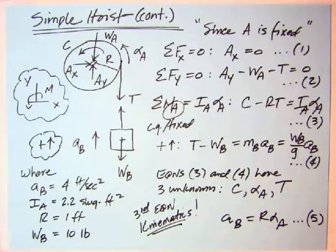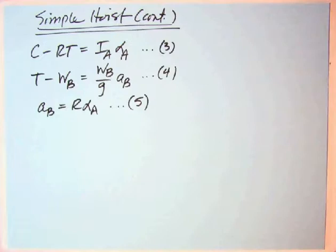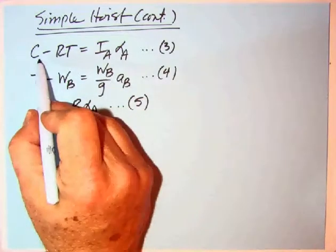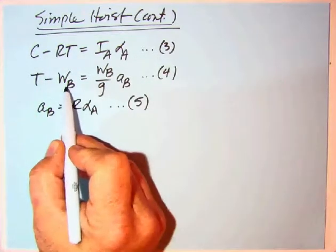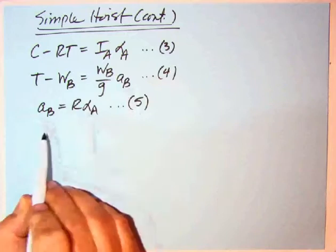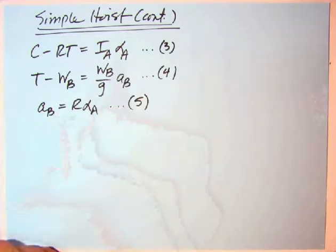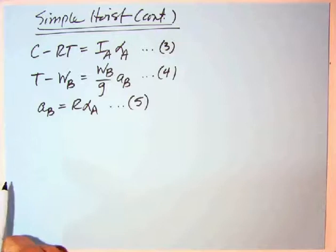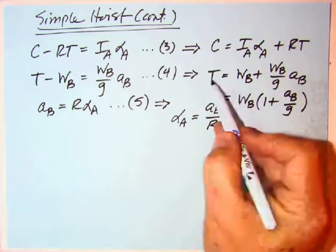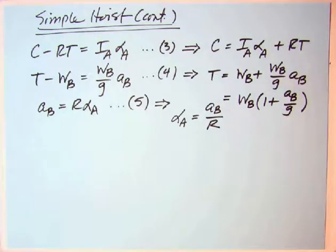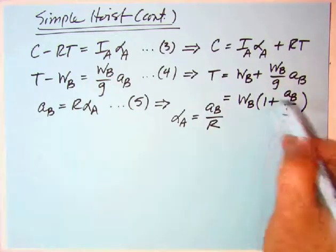This one will solve a lot quicker because we're looking for C. So we can solve for it. We can find T from this one because we know WB and A sub B. We can also find alpha A to put up here because we know A sub B and R. So this one just falls right on out.